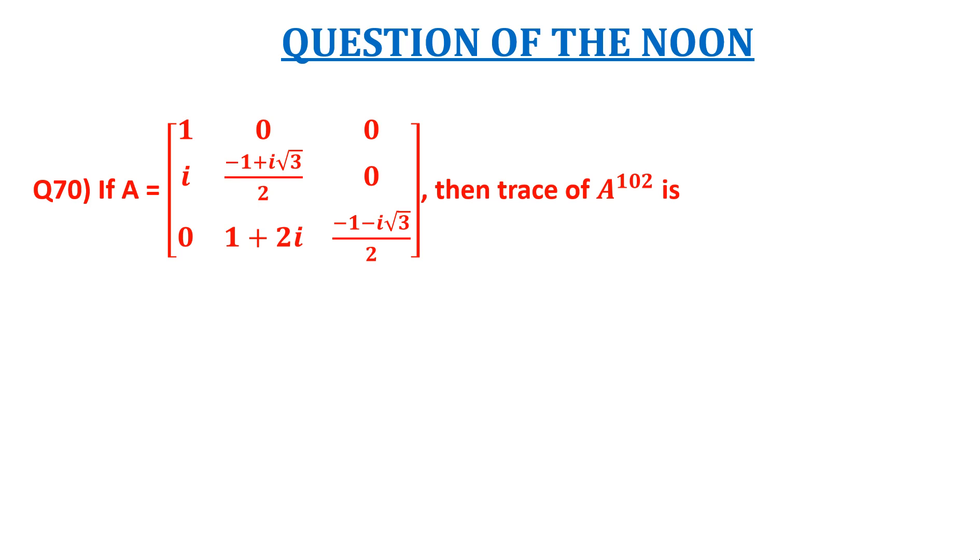The question is: A is equal to a 3 by 3 matrix with entries 1, 0, 0; i, minus 1 plus i root 3 by 2, 0; and 0, 1 plus 2i, and minus 1 minus i root 3 by 2.